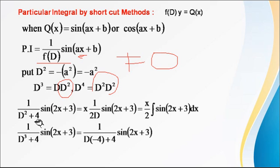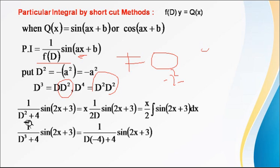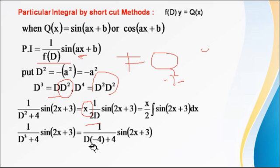For example, 1/(D²+4) · sin(2x+3): replacing D² with minus a², where a = 2, gives minus 4. So minus 4 plus 4 equals 0 — the denominator is zero. In this failure case, we apply the same process as for the exponential method: differentiate f(D) = D²+4 with respect to D, giving 2D. Differentiating once means we multiply the function by x, and 1/D means integration.